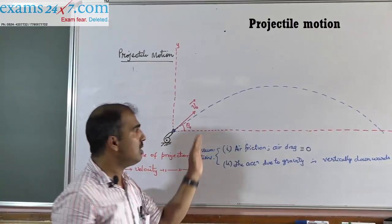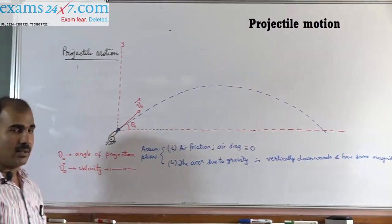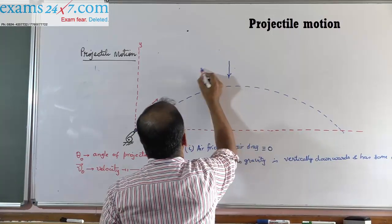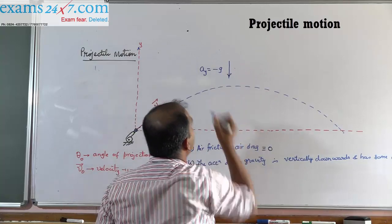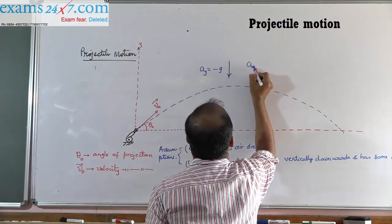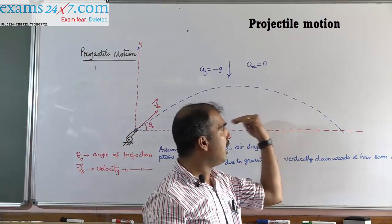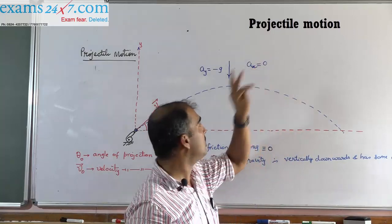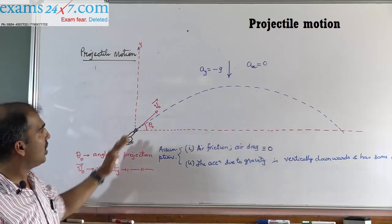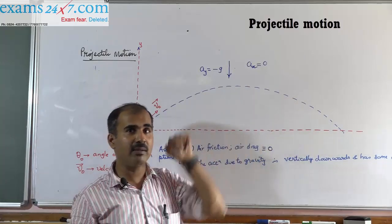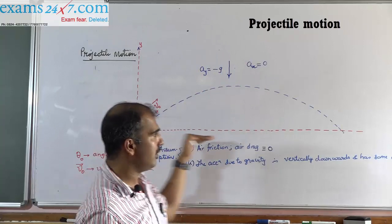Secondly, there is no change in acceleration due to gravity at any point, and at all points acceleration due to gravity acts vertically downward. This raises the question: will there be acceleration in the vertically downward direction? Yes. We call this Ay and since the acceleration is vertically downward, we call this minus g. Is there an acceleration in the x direction, Ax? No, because there are no acceleration-causing agents in the horizontal direction. If there were air drag in the opposite direction, there would be an acceleration in the x direction — but right now there is no acceleration in the x direction.